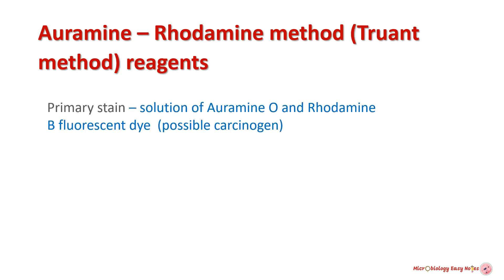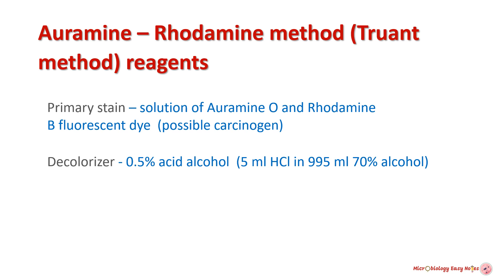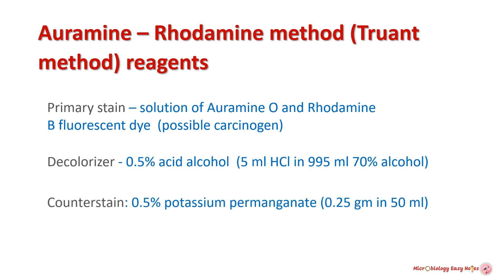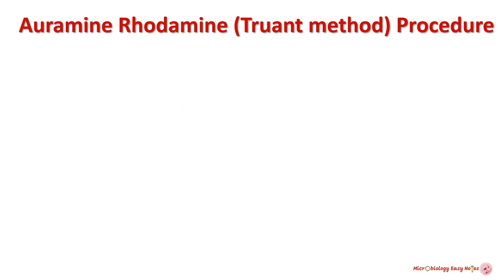Truant method reagents: the primary stain is a solution of Auramine O and Rhodamine B fluorescent dye, the decolorizer is 0.5% acid alcohol, and the counter stain is 0.5% potassium permanganate. Truant method procedure: prepare the smear and heat fix the slide.